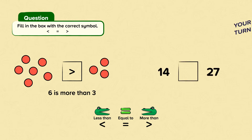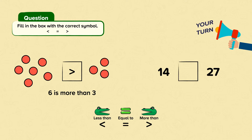Now it's your turn. Which symbol goes in this box? Charlie the crocodile will eat the larger side. We know we need to use this symbol — 14 is less than 27. Well done if you got that correct.